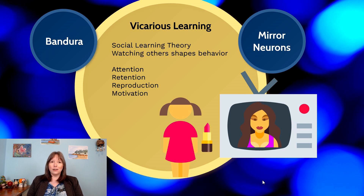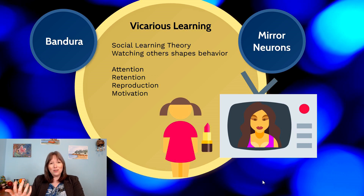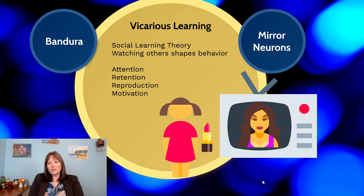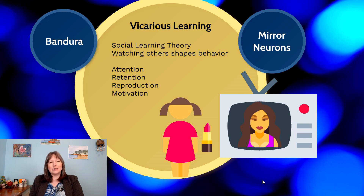There are four criteria for vicarious learning. The first is you have to be able to pay attention to the other person — you have to attend to what's going on; it can't be something subliminal or something you're inattentive of. The second is you have to be able to retain it. It has to be something you can remember — even if it's only in your implicit memory rather than explicit memory, you have to be able to retain it.